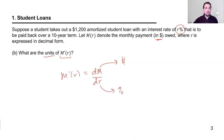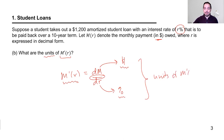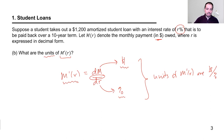In Leibniz notation, it helps to remember that the units of the derivative are the quotient of the units of the y-function with the units of the independent variable x. So the units of M prime of R are dollars per percent. We'll see how these strange-looking units play out in the next question.